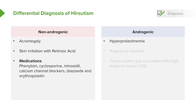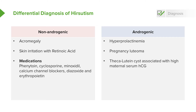Recall that elevated prolactin can also cause hirsutism. Luteoma of pregnancy can also be an androgenic cause, and this usually happens when the placenta also has some issue as well. Thecalutein cysts are also associated with high maternal serum HCG.